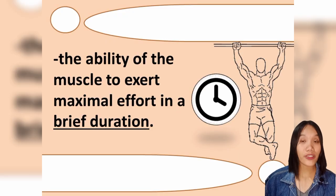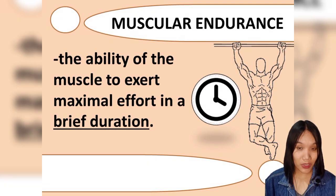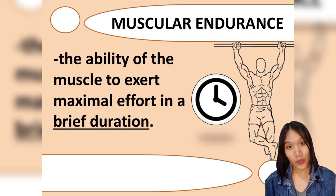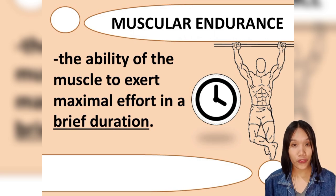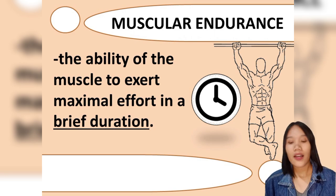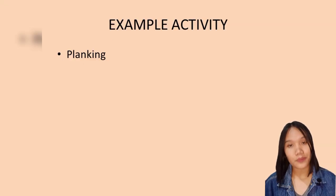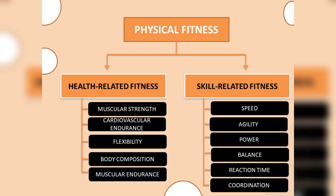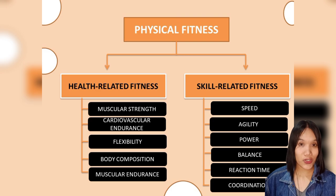Muscular endurance is the ability of the muscle to exert maximal effort in a brief duration. The word 'endurance' relates to time — how long your muscles can perform within an activity. An example activity for measuring muscular endurance is planking. This completes the health-related fitness components: muscular strength, muscular endurance, cardiovascular endurance, flexibility, and body composition.